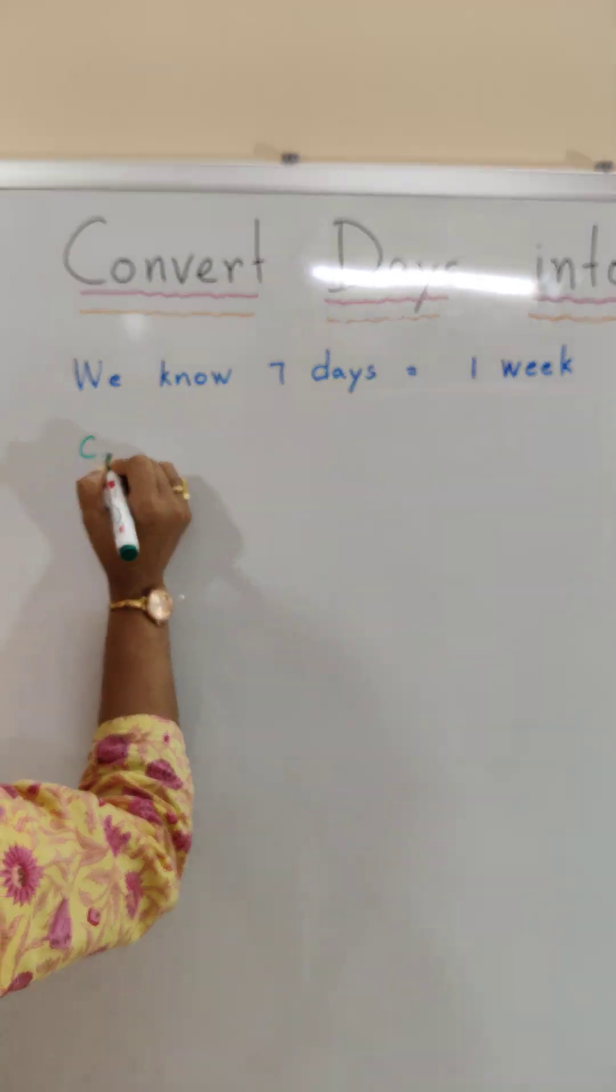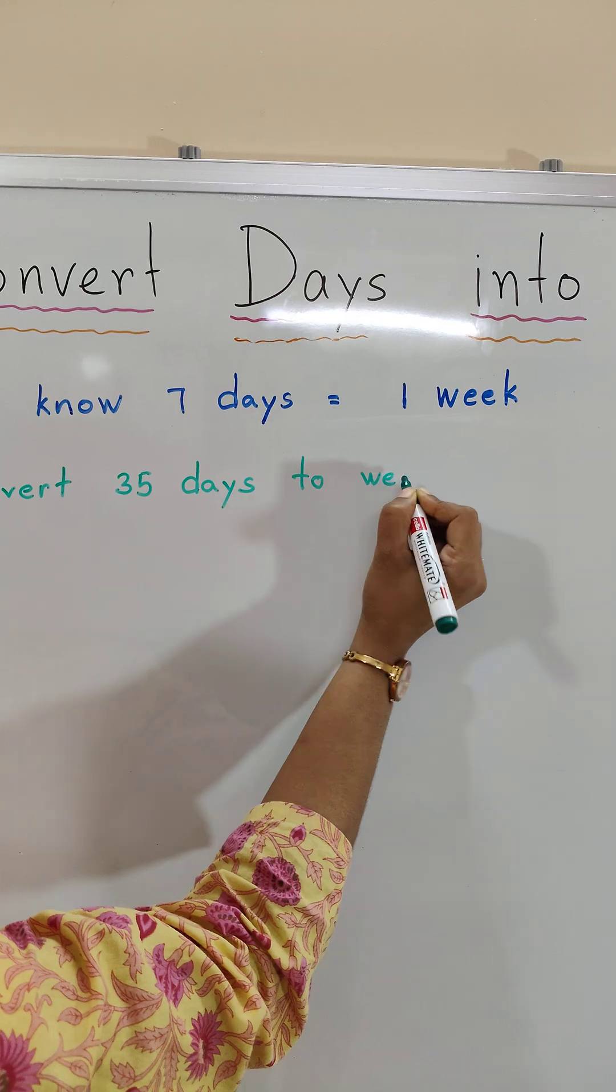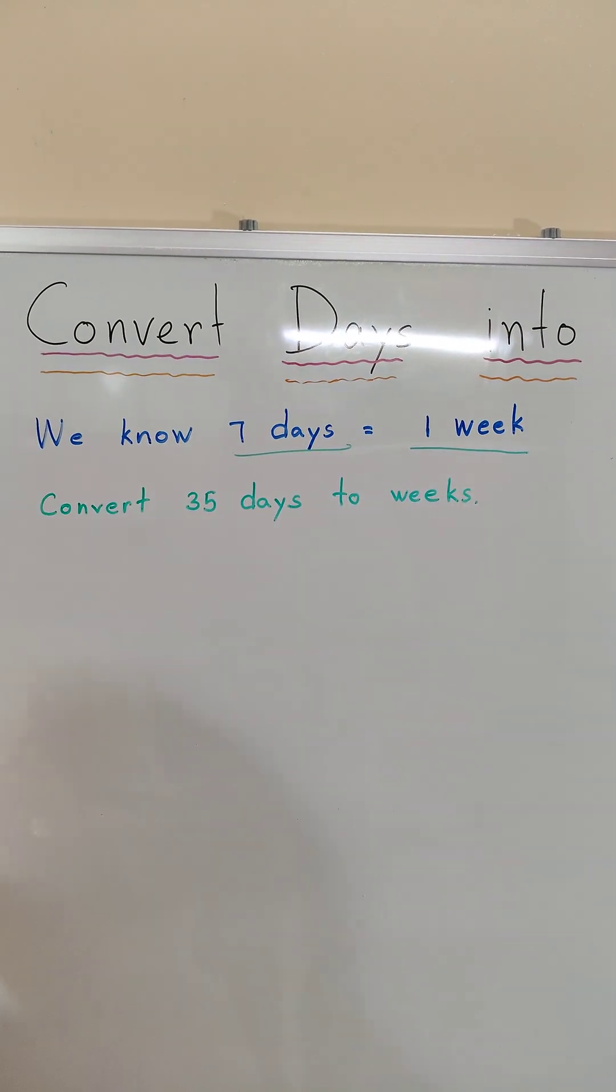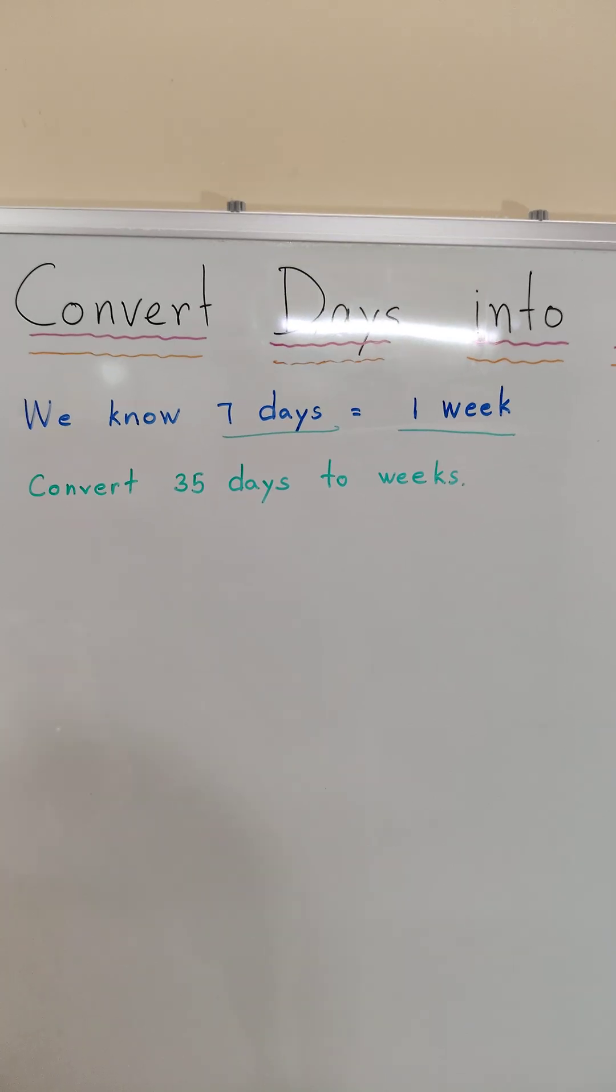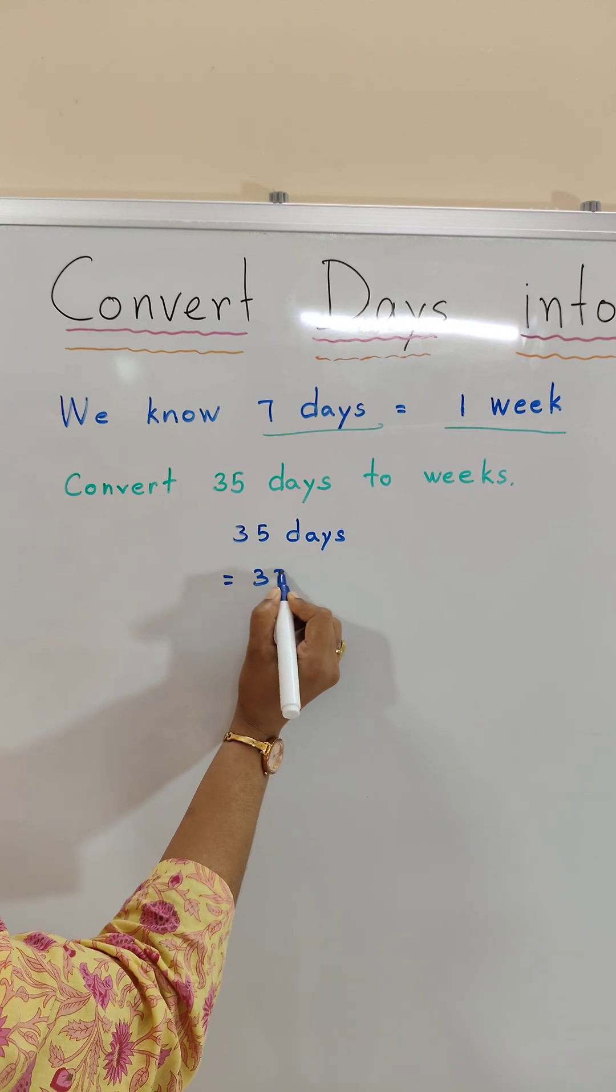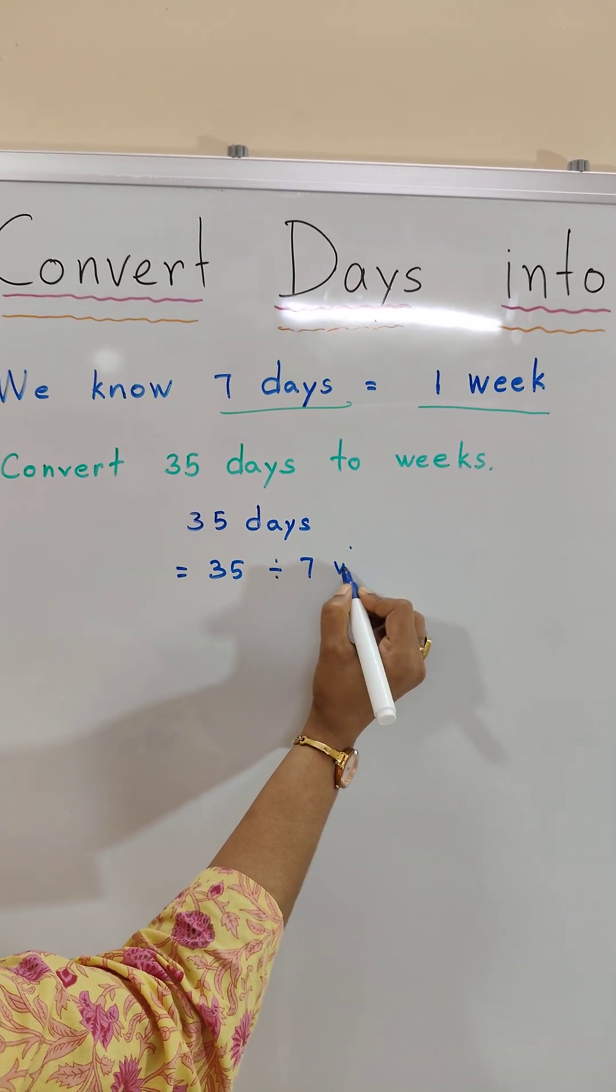For example, convert 35 days to weeks. We know 7 days is equal to 1 week. So to convert 35 days,